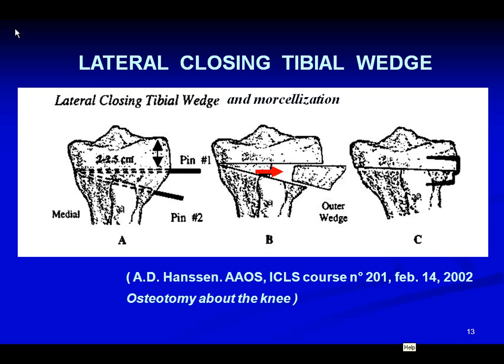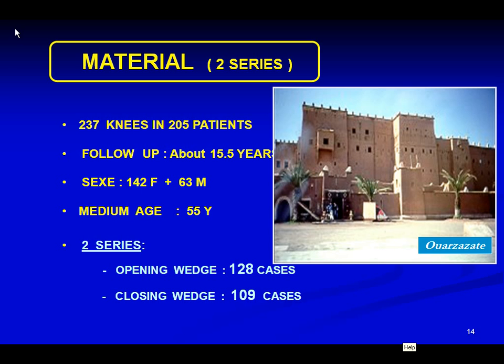Our series includes 237 knees with a follow-up of 15.5 years. Most patients are female with a median age of 55 years — quite young. We have two series: one of opening and the other of closing. The opening series has 128 knees with a median initial KS score of 99 points out of 200 and a median initial varus of 13 degrees.